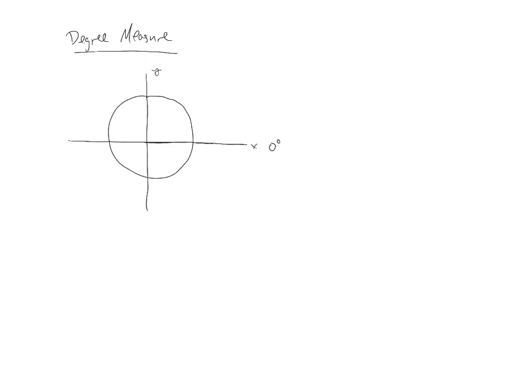As we start to go counterclockwise, this would be 90 degrees. This would be 180 degrees. We have 270 degrees. And then we're back to where we started, which is 360 degrees. And the reason why the circle hopefully is helpful is because most people understand that there's 360 degrees in a circle.